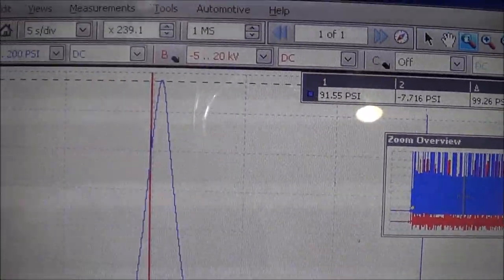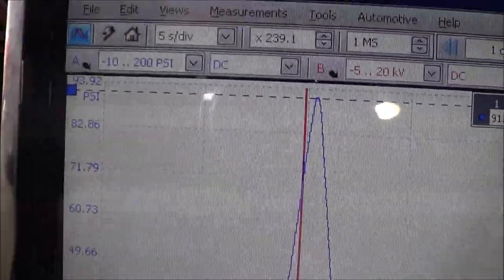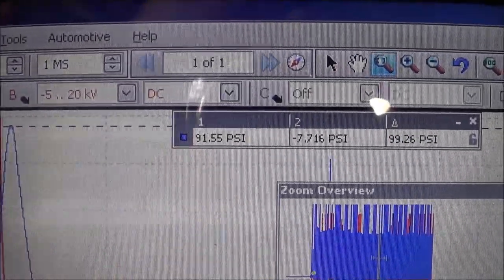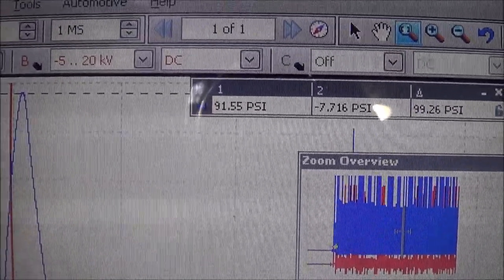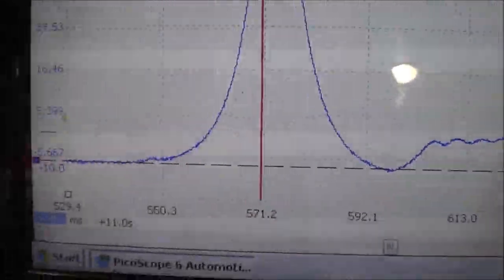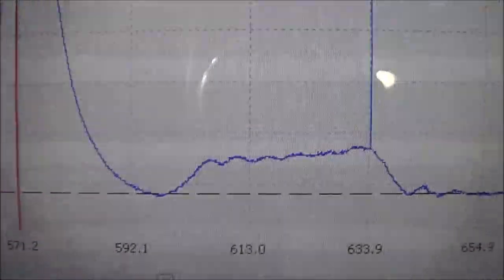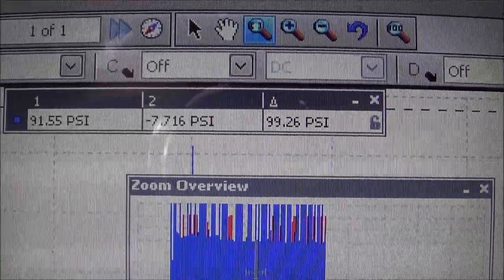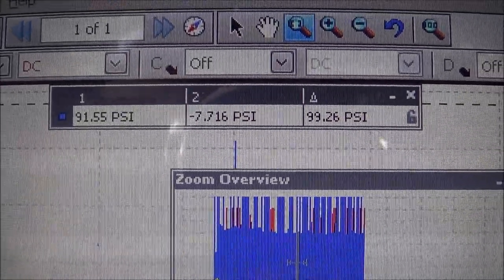So this is going to be top dead center, that's going to be the maximum amount of compression that was made inside the cylinder. And it seems to be at 91.55 psi. And then on the vacuum side right here, it seems to be at negative 7.7, so roughly about 15 inches of mercury, maybe a bit more.